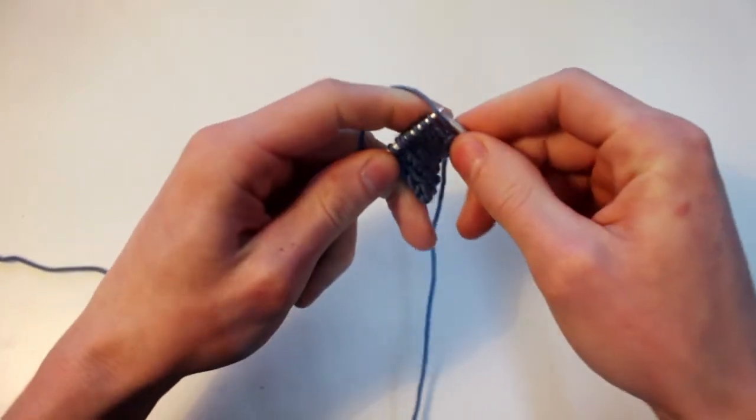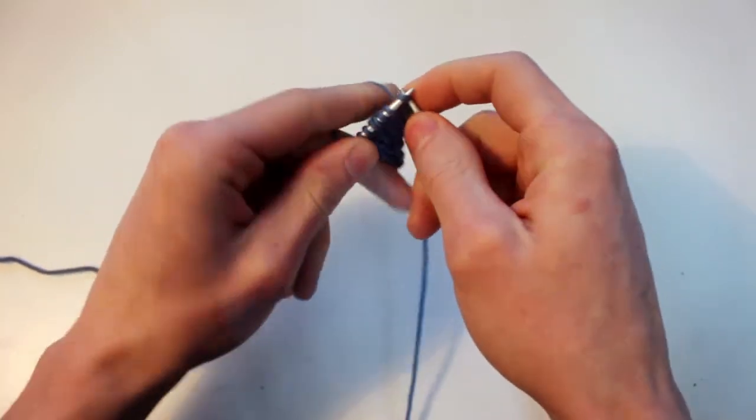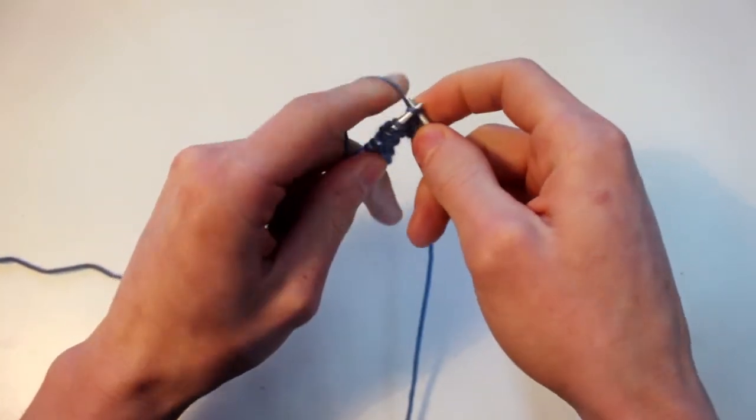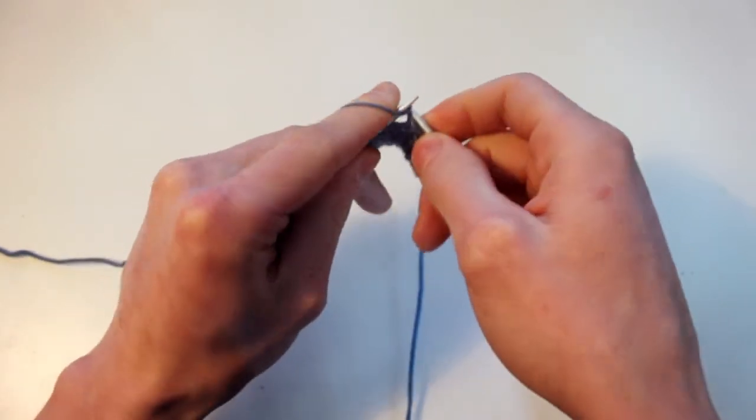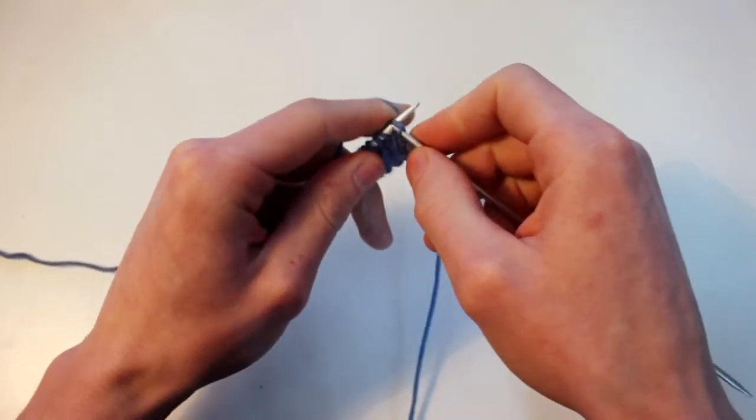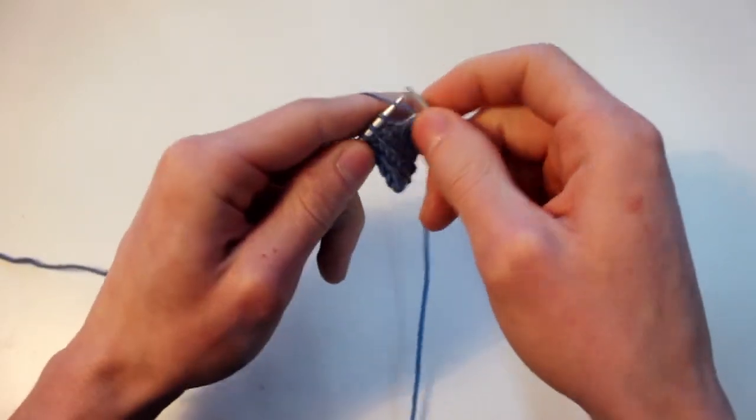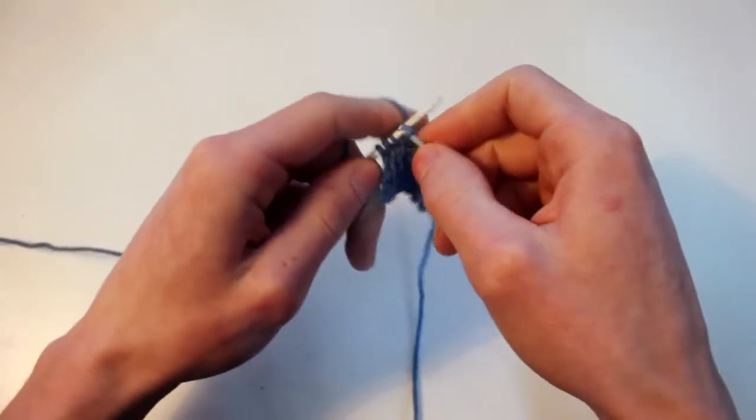But once the loop is worked I want to retract and tighten that new loop. So that's what we're doing all the time. When I insert a needle through a loop and pull the yarn through it I want it to be slack. But once that yarn is worked through that loop and a new loop is created I want to tighten the new loop again.